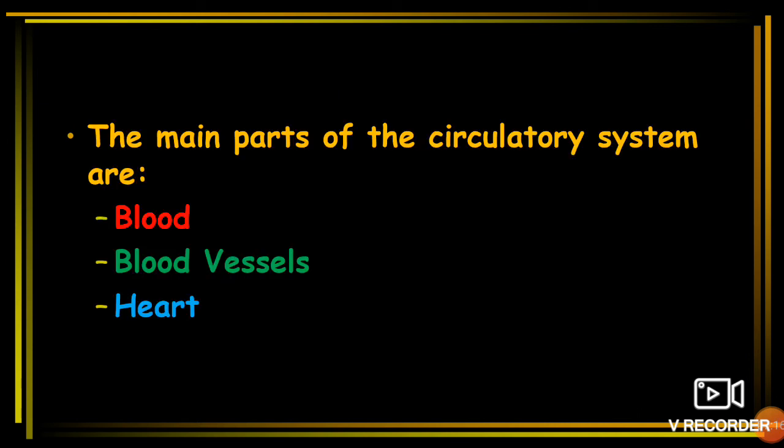The main parts of the human circulatory system are: blood, blood vessels, and the heart. Blood is a liquid. Blood vessels are all the vessels responsible for carrying blood from one part of the body to another — mainly from the heart to the various organs. The heart is the organ that pumps blood throughout the body.